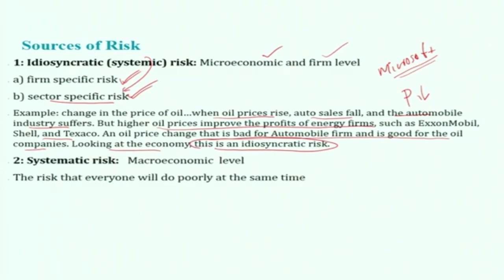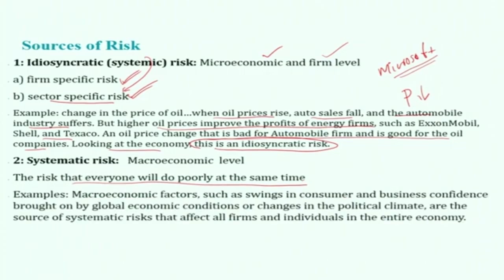Moving to another risk called systematic risk — this is at the macroeconomic level, at the aggregate level, meaning the economy as a whole. These are risks where everyone will do poorly at the same time. Examples include macroeconomic factors such as swings in consumer and business confidence brought on by global economic conditions or changes in the political climate — these are sources of systematic risk that affect all firms and individuals in the economy.